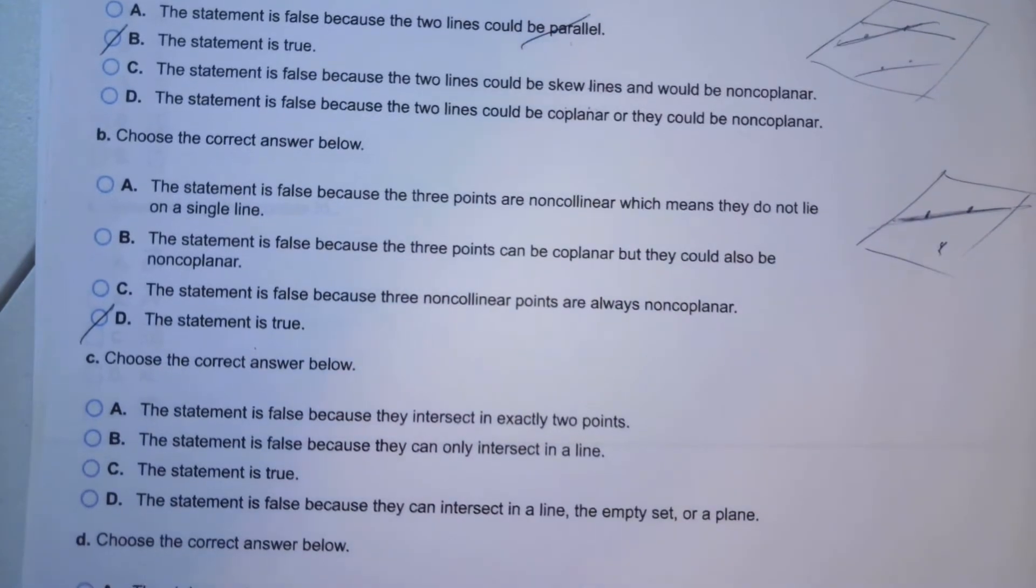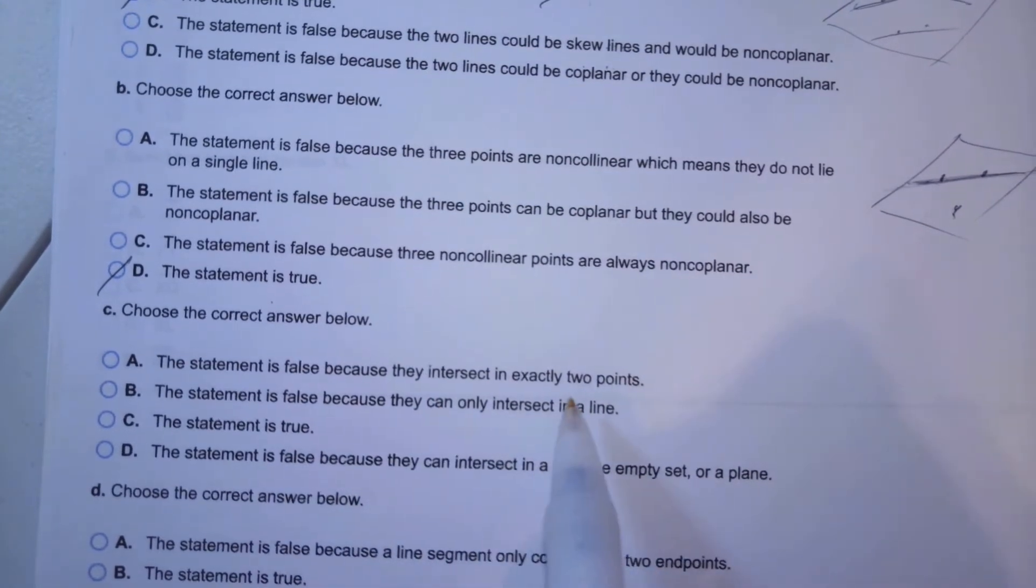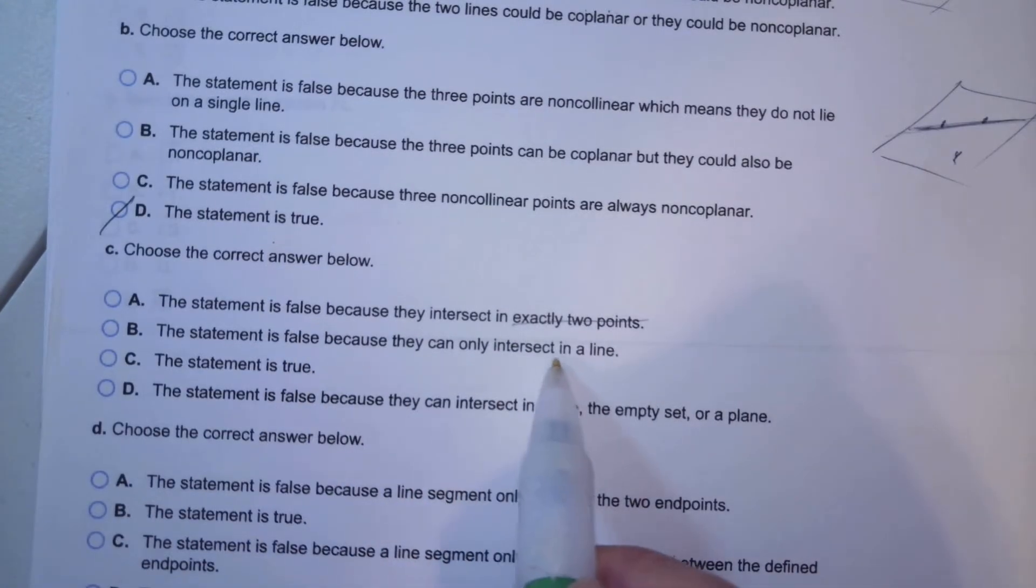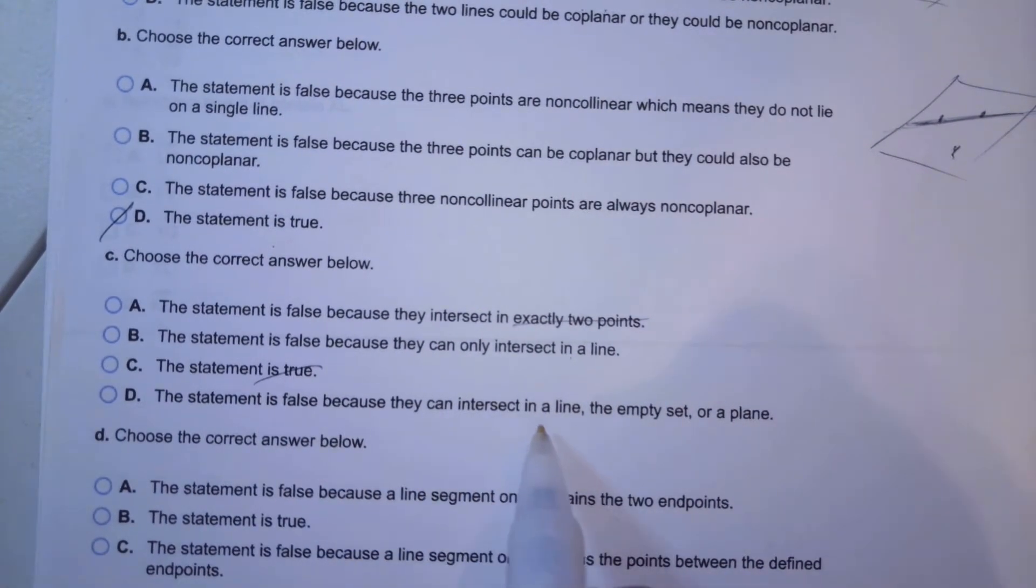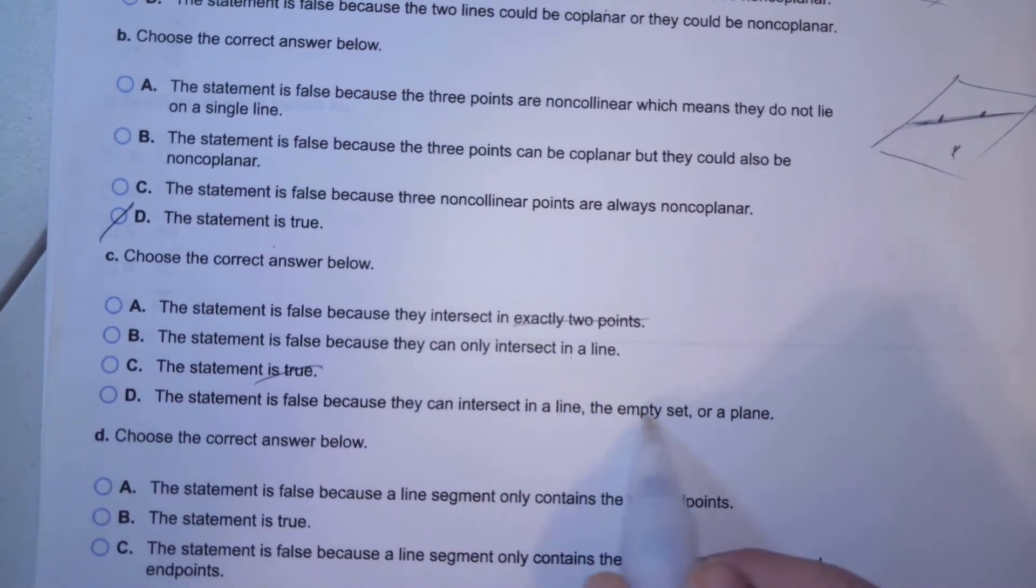Number C: two planes can intersect at exactly one point. Well, planes, that has to be false. It's not true, it's infinite points. It's false because they can intersect in a line, empty space, or in a plane. Two planes can intersect in a line, they can be parallel, or they can be the same. So it's D.